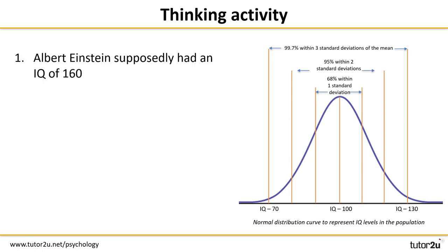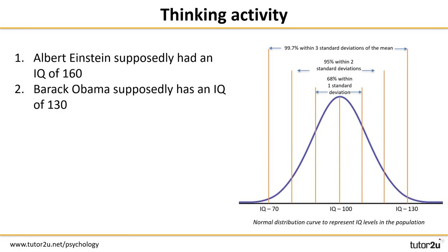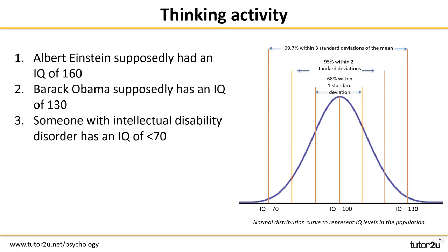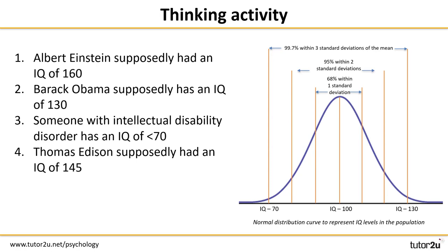First we asked about Albert Einstein, the famous physicist, who supposedly had an IQ of 160 — several standard deviations higher than the mean. Anyone with an IQ of more than 130 is considered to be a genius. Next, Barack Obama, former president of the USA, supposedly has an IQ of approximately 130. Someone with intellectual disability disorder would have an IQ of 70 or lower, with some as low as 30 — several standard deviations below the average IQ of 100, making it very rare.